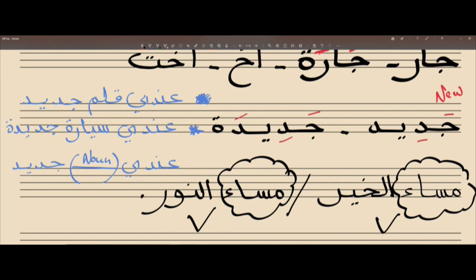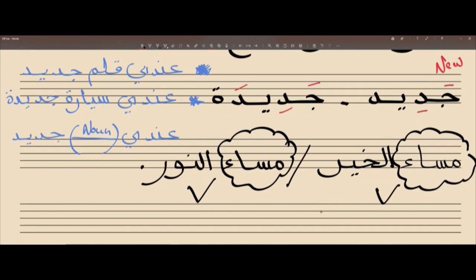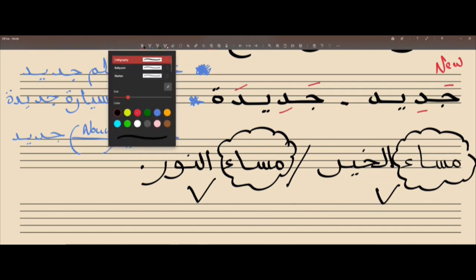Yalla, ya Emalia - can you say the first part and then Julia will respond? Make it competitive. مساء الخير، يا جوليا. مساء النور، يا إيماليا. Mumtaz. مساء الخير - مساء النور. Mumtaz. And then you can say صباح الخير and صباح النور.